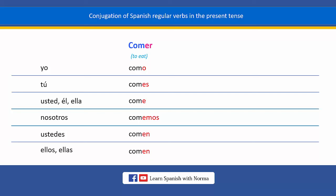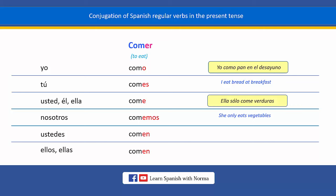Now, let's see some example sentences. Yo como pan en el desayuno. Ella solo come verduras. Ustedes siempre comen juntos.